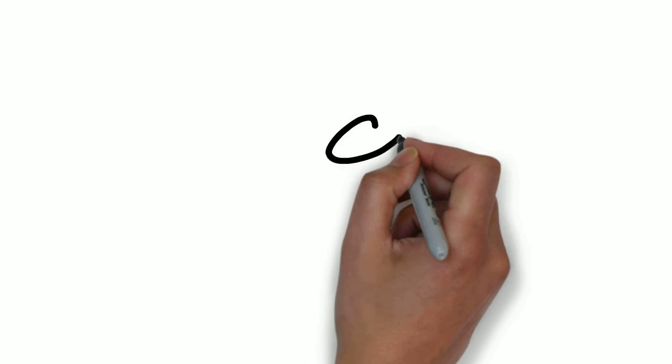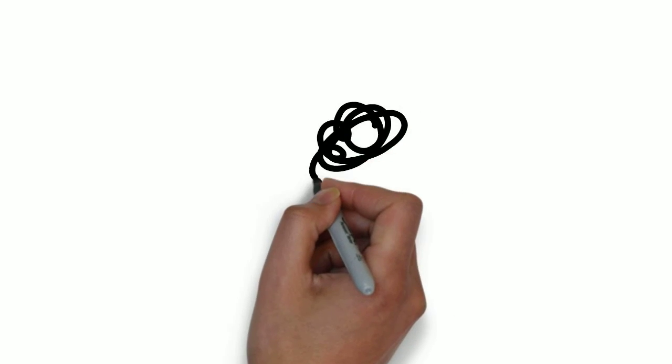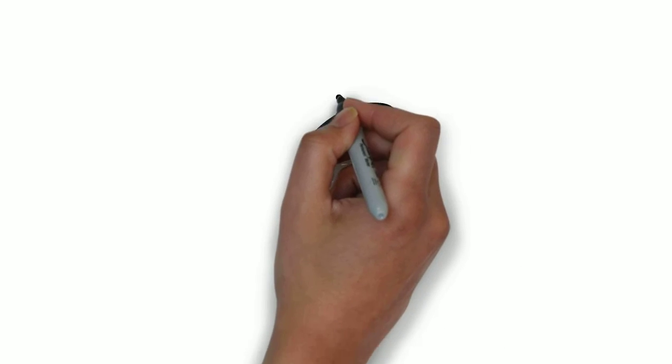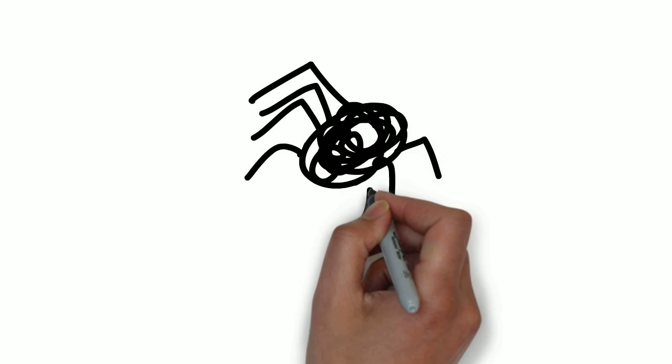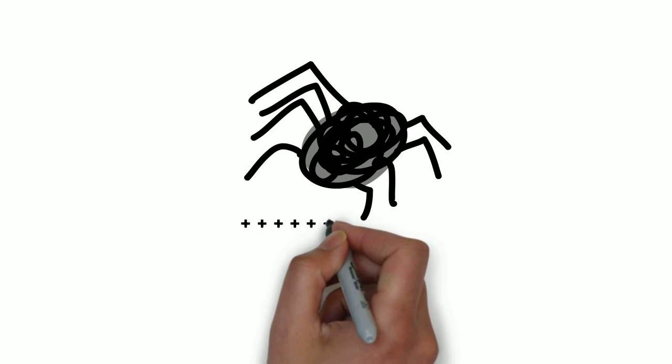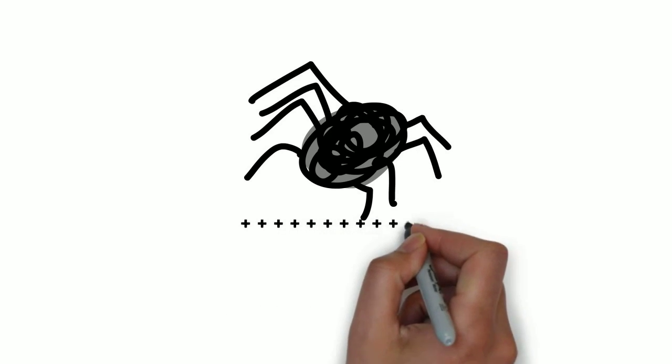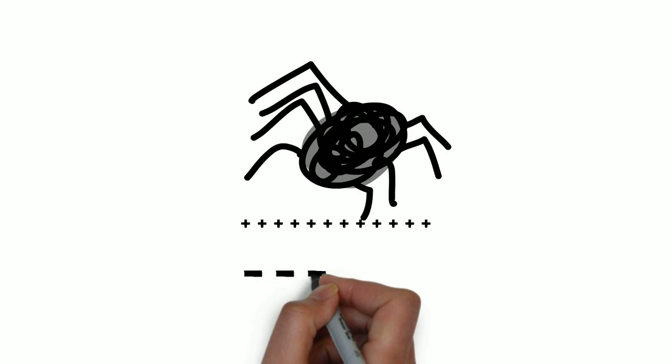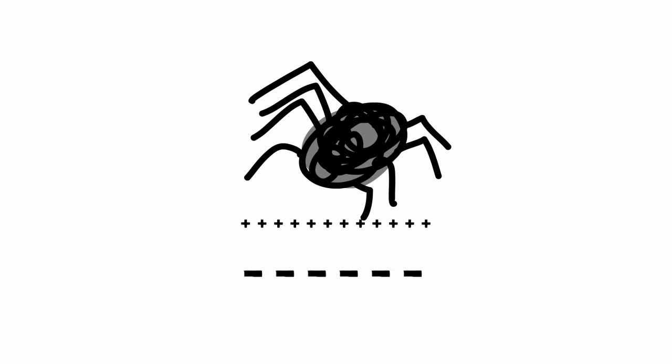Spiders are covered with tiny hairs called setae. At the end of every setae are loads of minuscule hairs called spatulae. These hair cells are the reason why spiders have the ability to climb walls and stick to their surfaces. The tiny hairs form a weak electrostatic attraction between surfaces due to the positive and negative charge distribution. This is called Van der Waals forces.